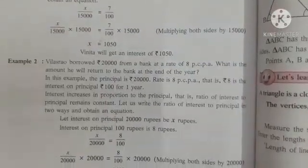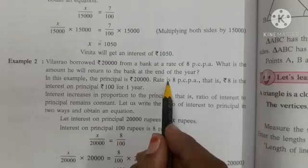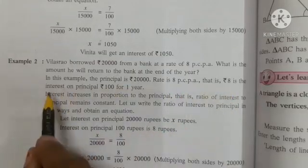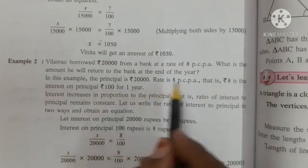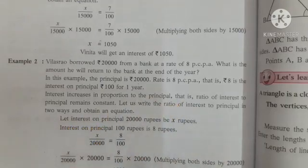Example 2: Vilasrao borrowed Rs 20,000 from a bank at the rate of 8 PCPA, meaning for Rs 100 the interest is Rs 8 for 1 year. What is the amount he will return to the bank at the end of the year? Here Vilasrao is borrowing from the bank, so he has to pay interest to the bank. Principal is Rs 20,000, rate is 8 PCPA. Interest increases in proportion to the principal.